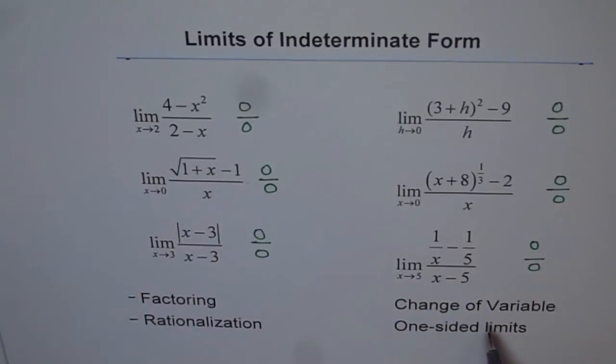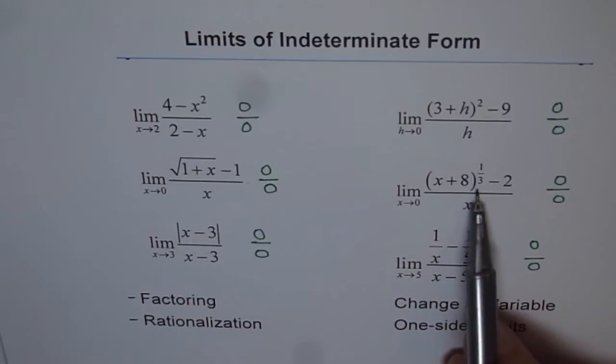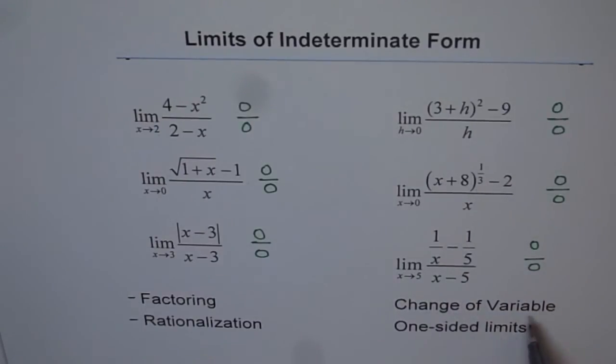Another very important technique is change of variable. Sometimes when radicals are there, it is very difficult to factor or even rationalize them. So in such cases, we will adopt change of variable. We will have a couple of examples on change of variable. It is a difficult technique to start with, but very useful and important.